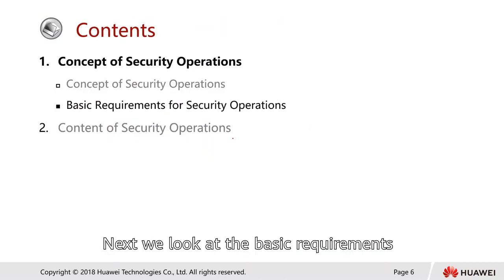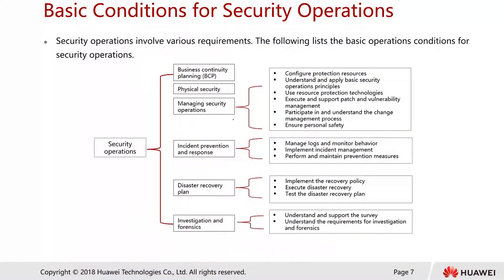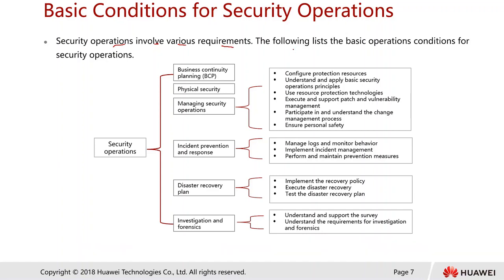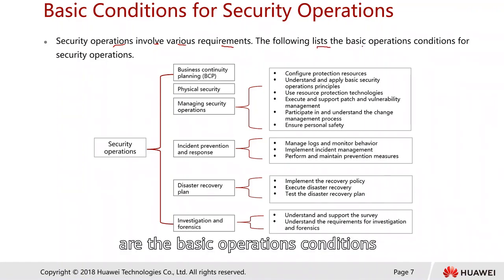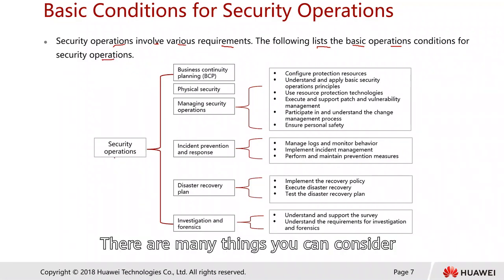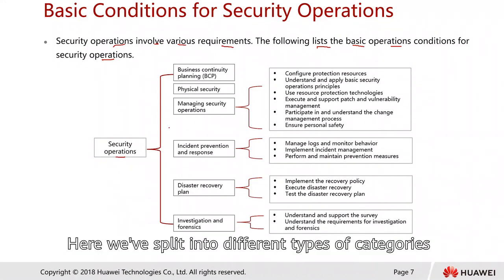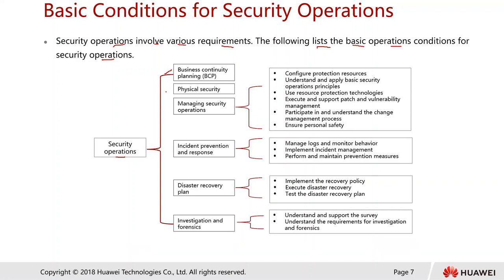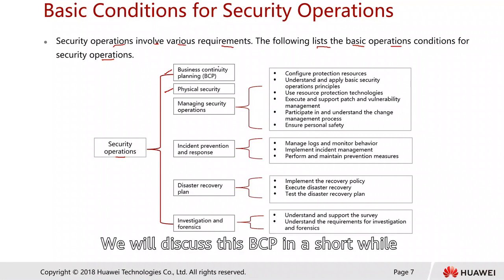Next we look at the basic requirements for security operations. Security operations involve various requirements. The following categories are the basic conditions for security operations. We have Business Continuity Planning (BCP) and we have physical security. We will discuss BCP in a short while in the next few slides.